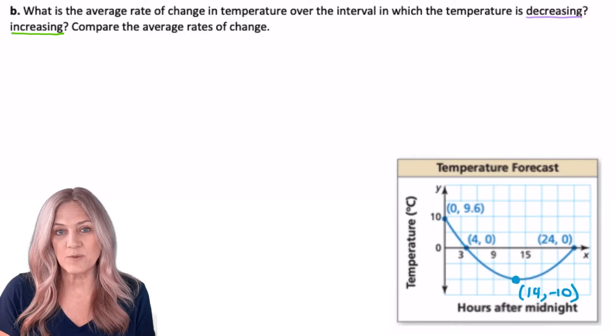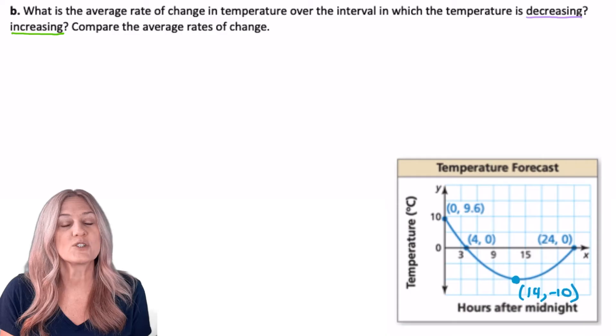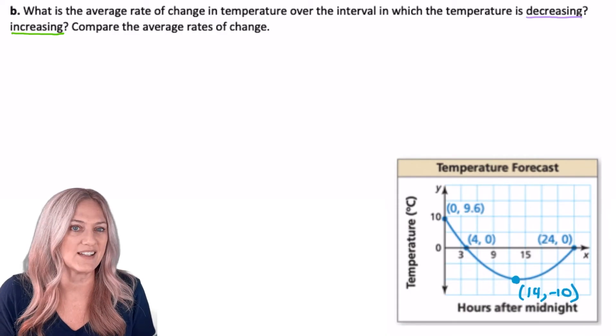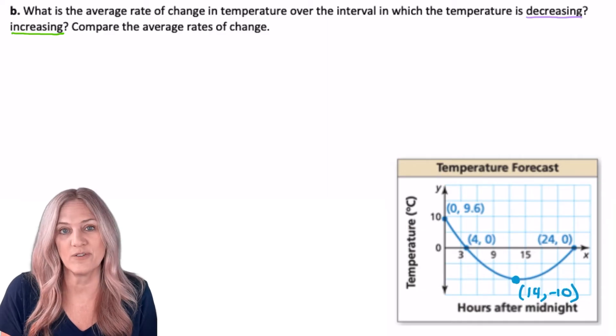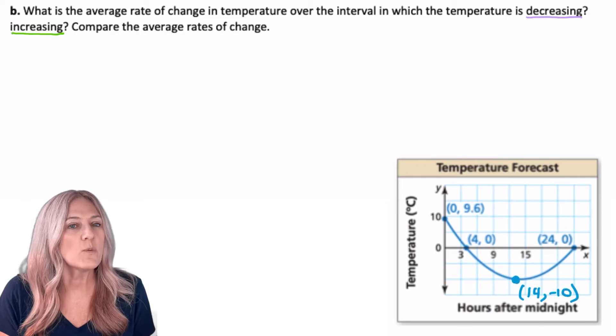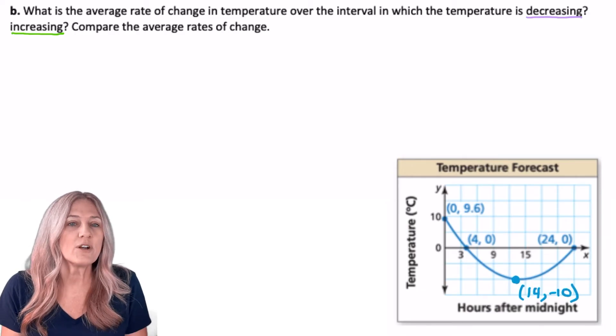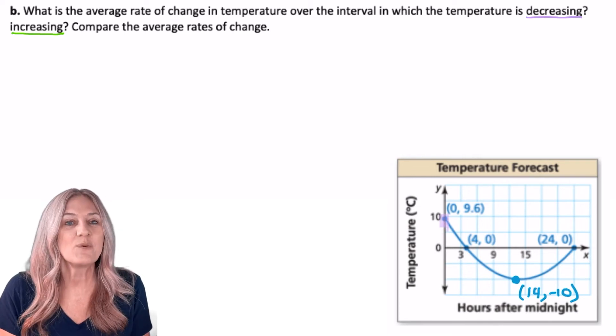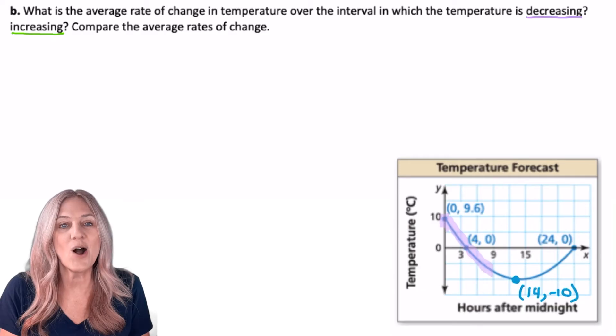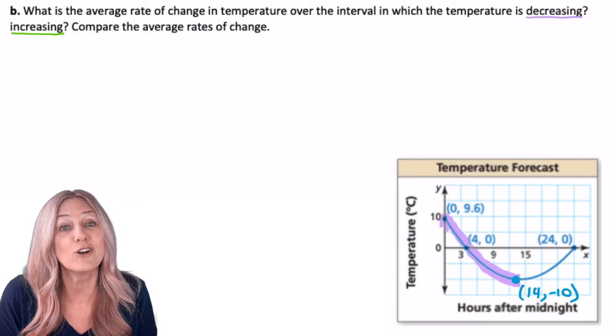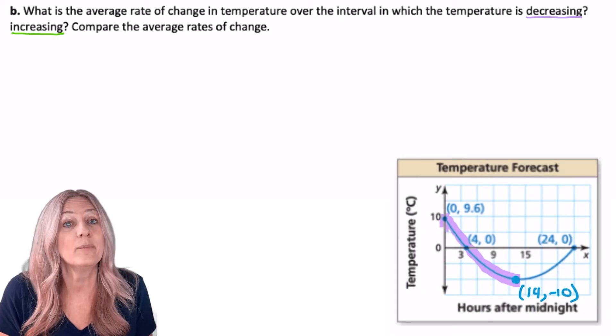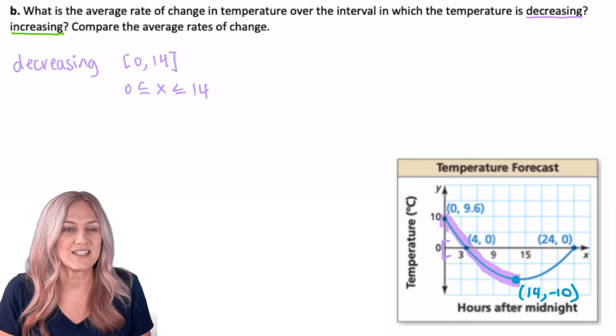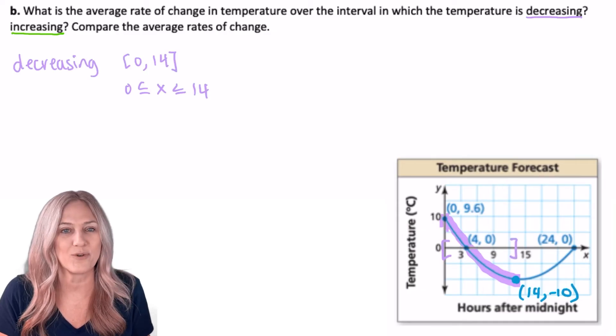Next, we're asked to find the average rate of change over the interval for where the temperatures are decreasing and then over the interval for where the temperatures are increasing. So first, let's look at what interval the graph is decreasing on. For this, we want to look at x values. Let's trace from x equals 0, so (0, 9.6). And we see the temperatures are decreasing all the way to x equals 14 where the vertex occurs and the minimum value, the coldest temperature. So we see that our graph is decreasing. The temperatures are decreasing on the interval from 0 to 14.